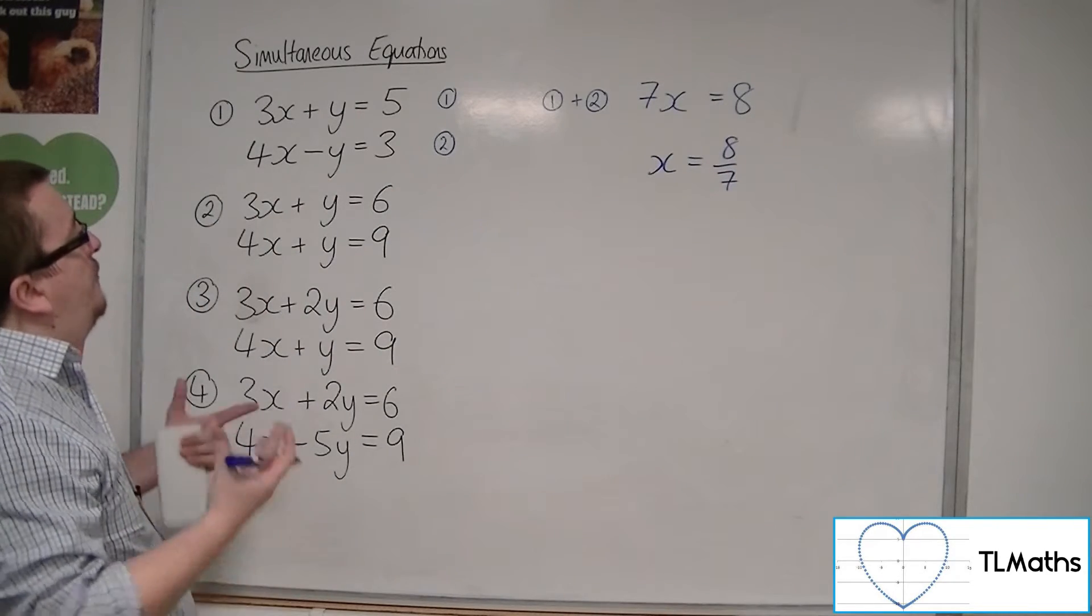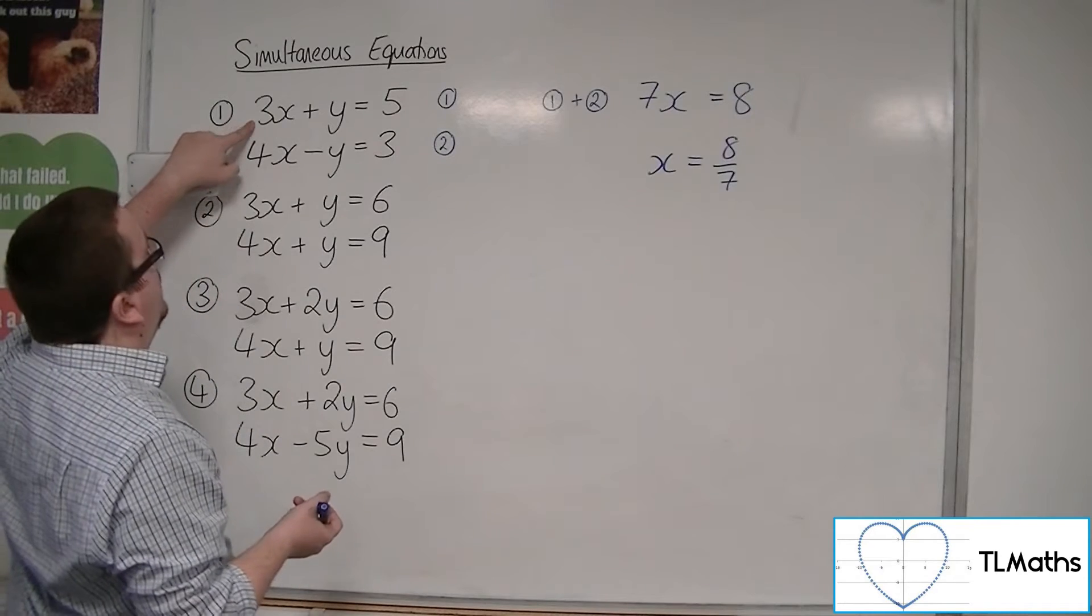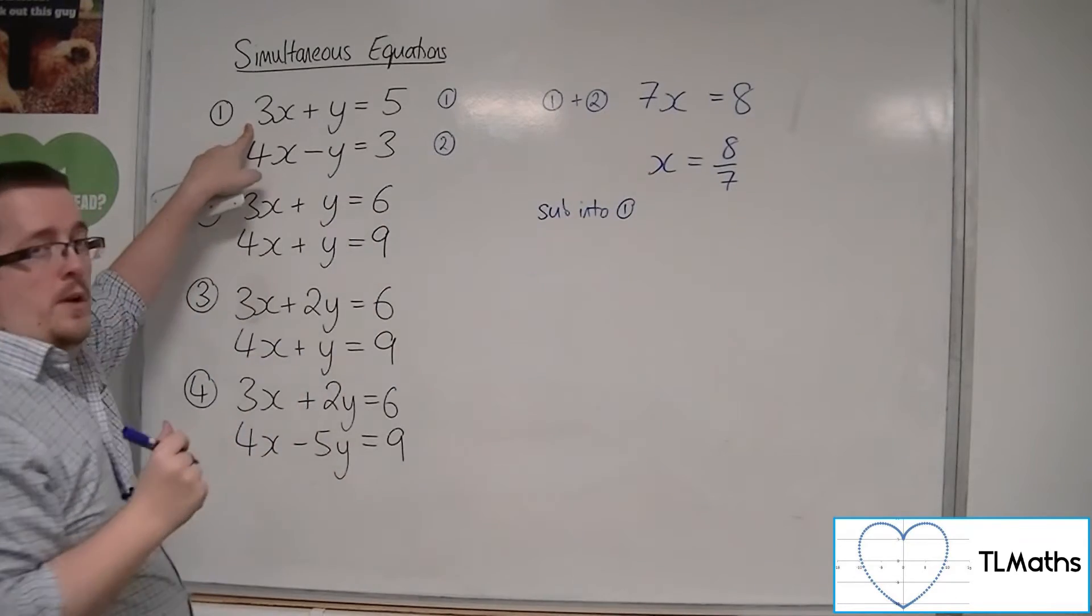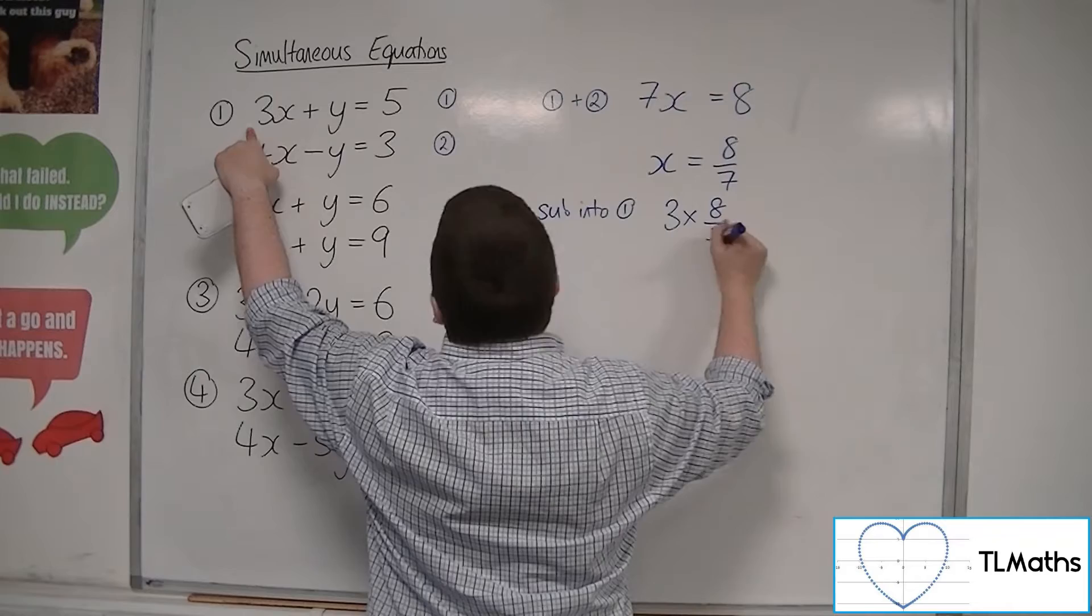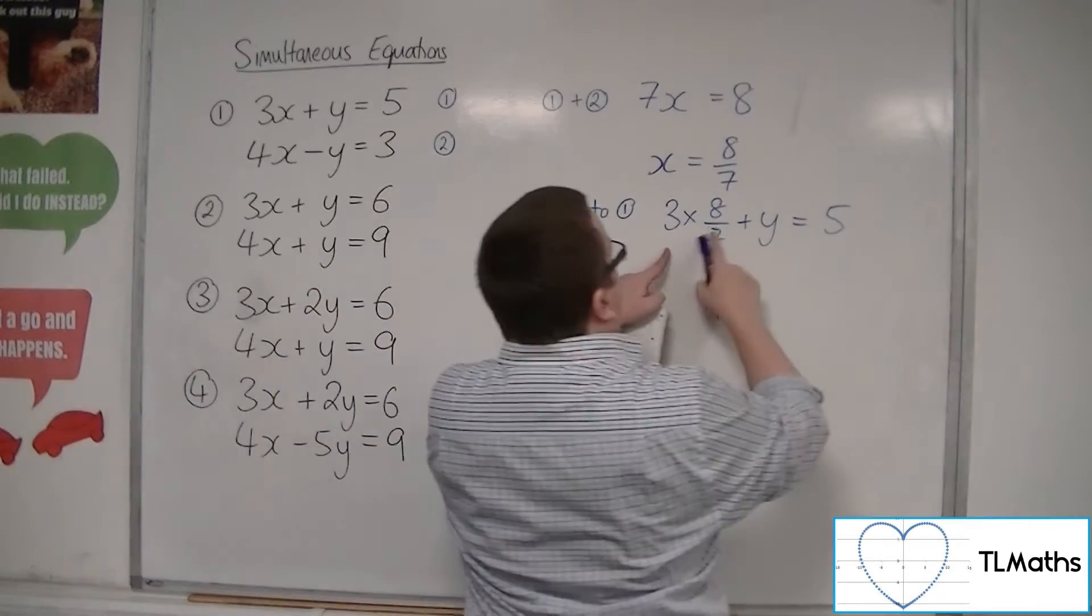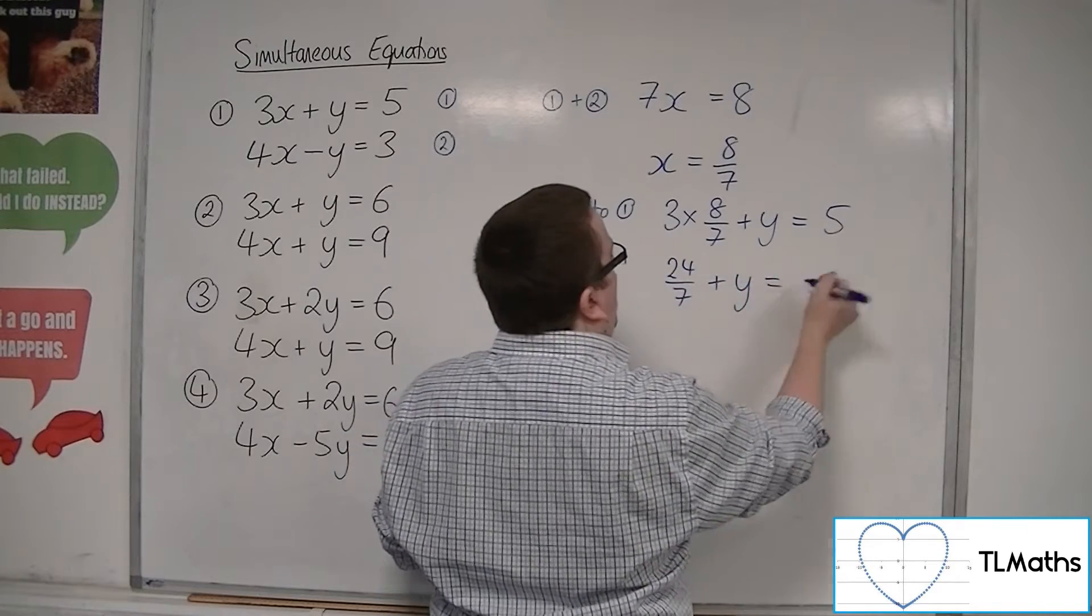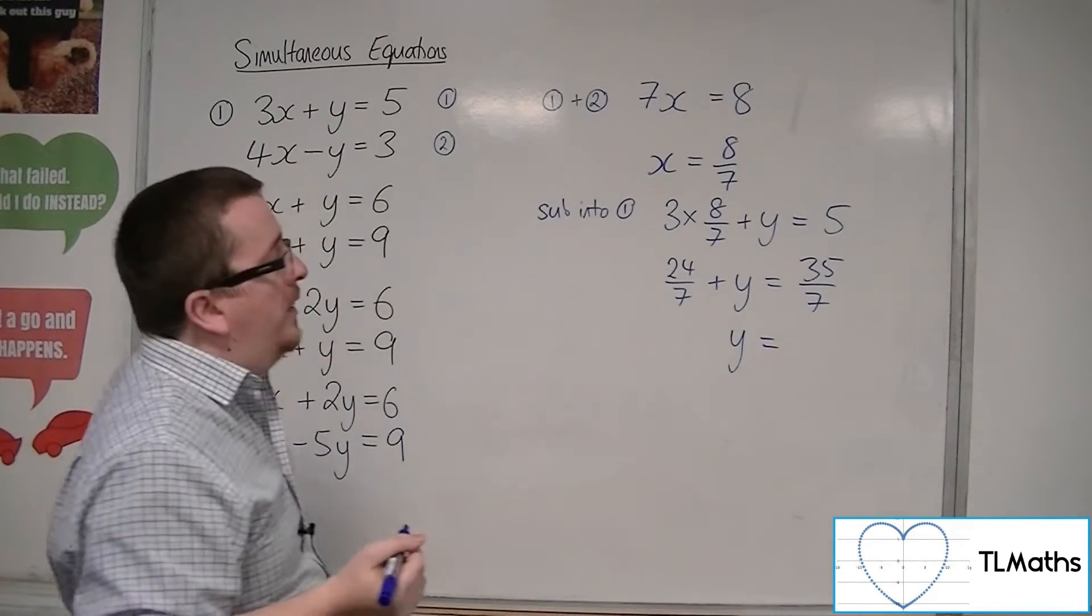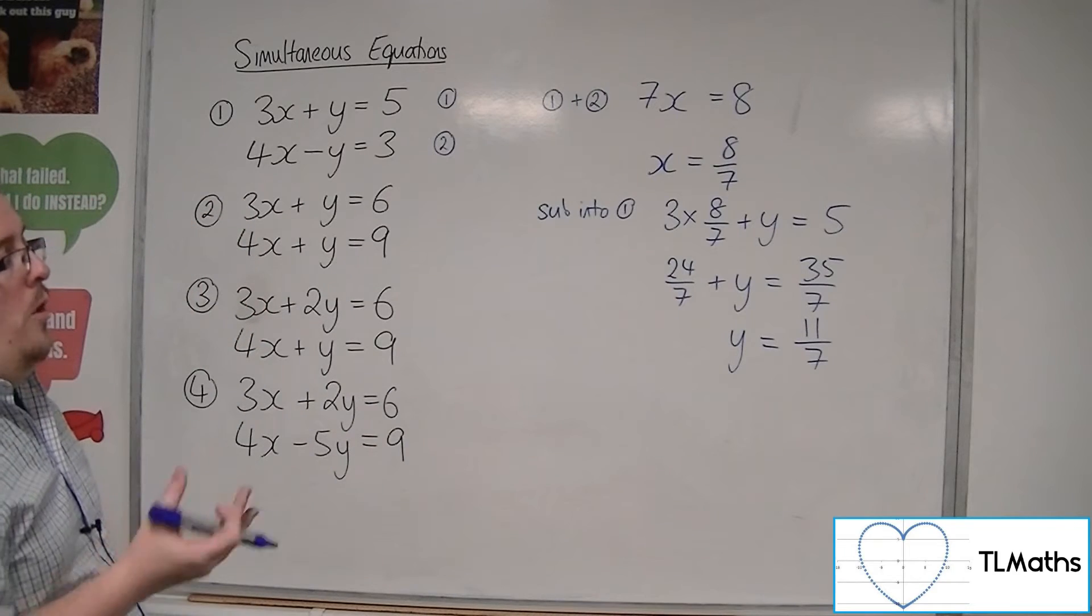We now need to find the value of y. So if I substitute into one of the two equations, I'm going to substitute into number 1. So sub into 1. It's always good practice to tell the examiner exactly what you're doing at each step. So I've got 3 lots of 8 sevenths plus y equals 5. So 3 lots of 8 sevenths is 24 sevenths plus y. And we're going to change that into sevenths as well, so 35 sevenths. So subtract the 24 sevenths from both sides, and that will leave me with 11 sevenths. So x equals 8 sevenths, and y equals 11 sevenths.